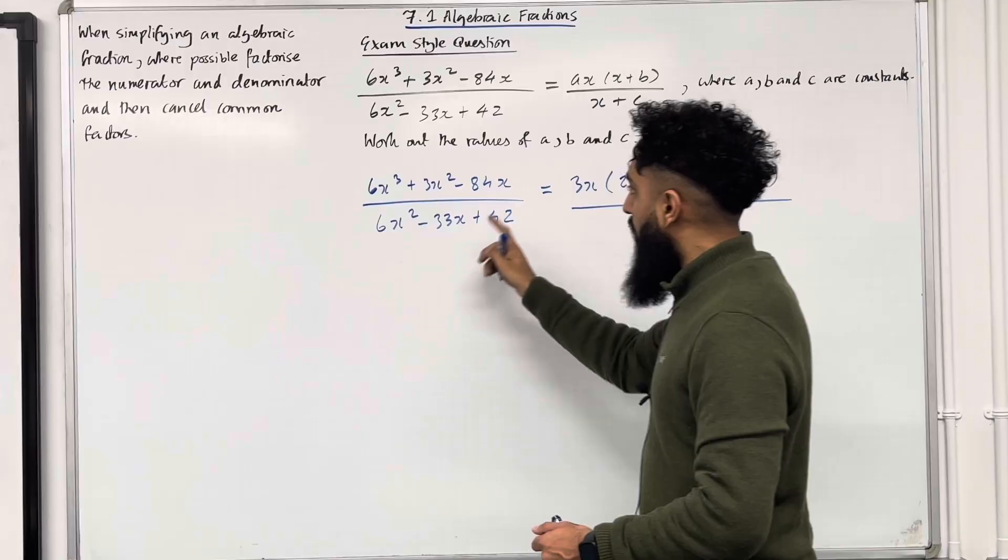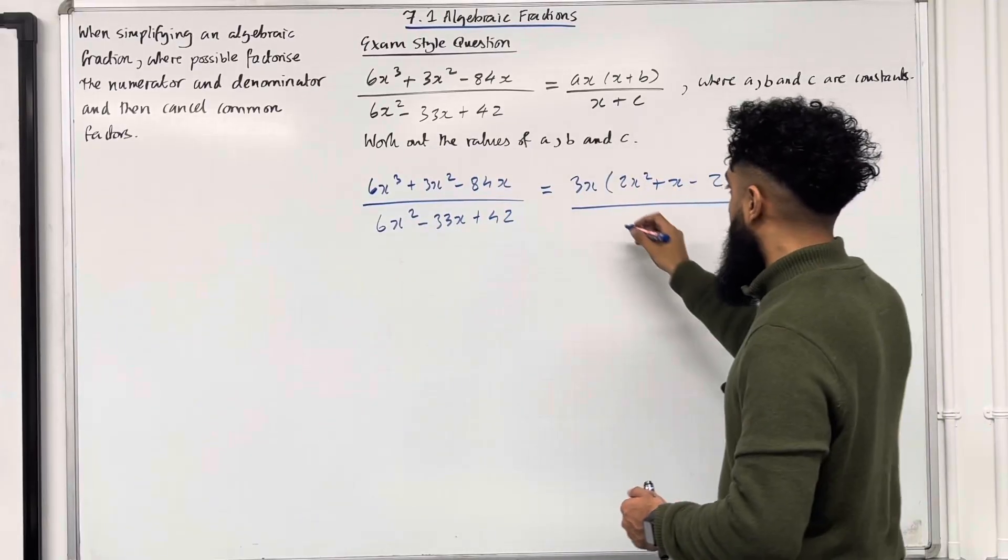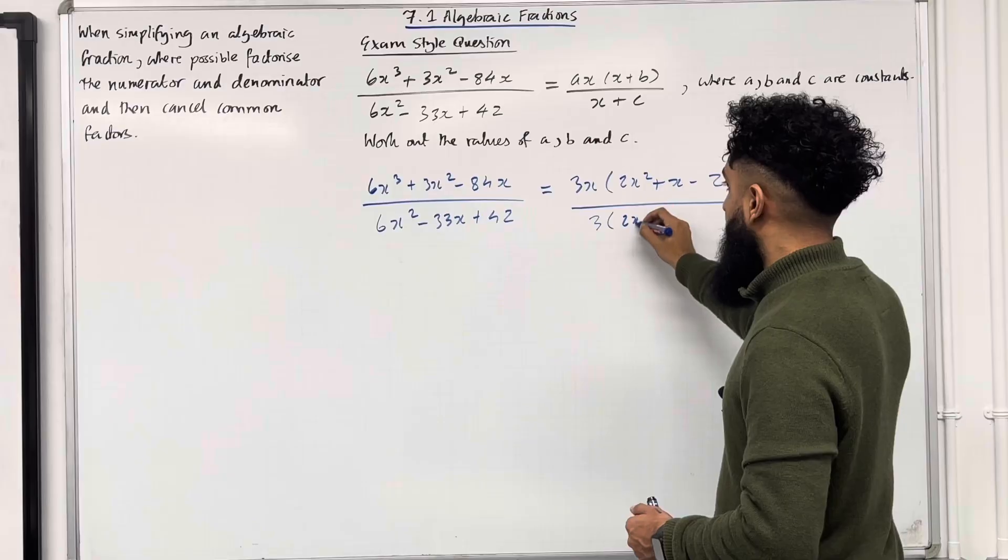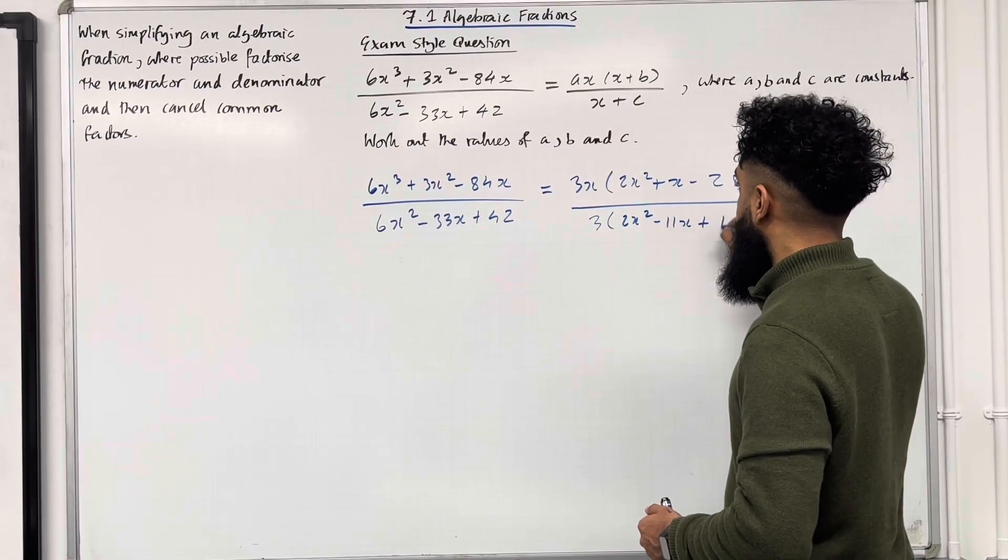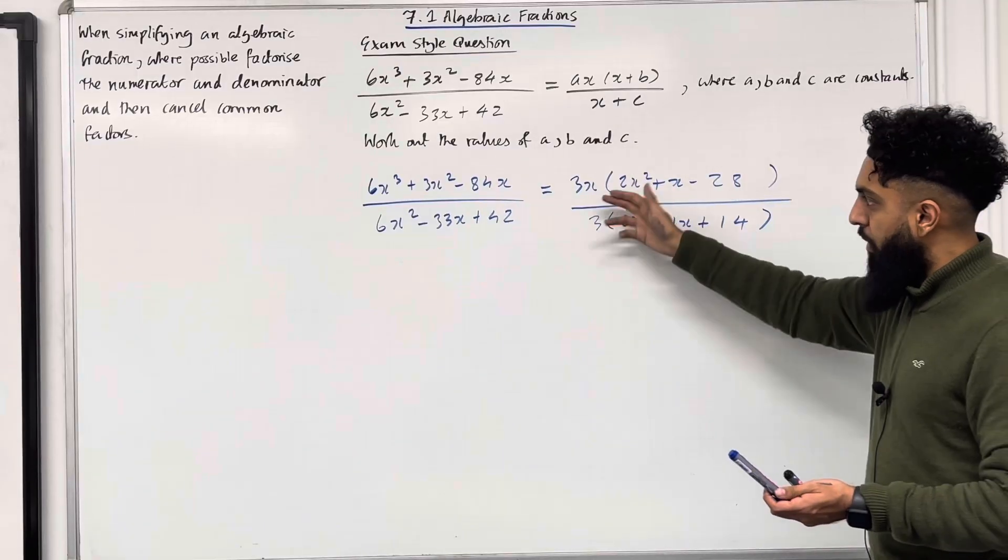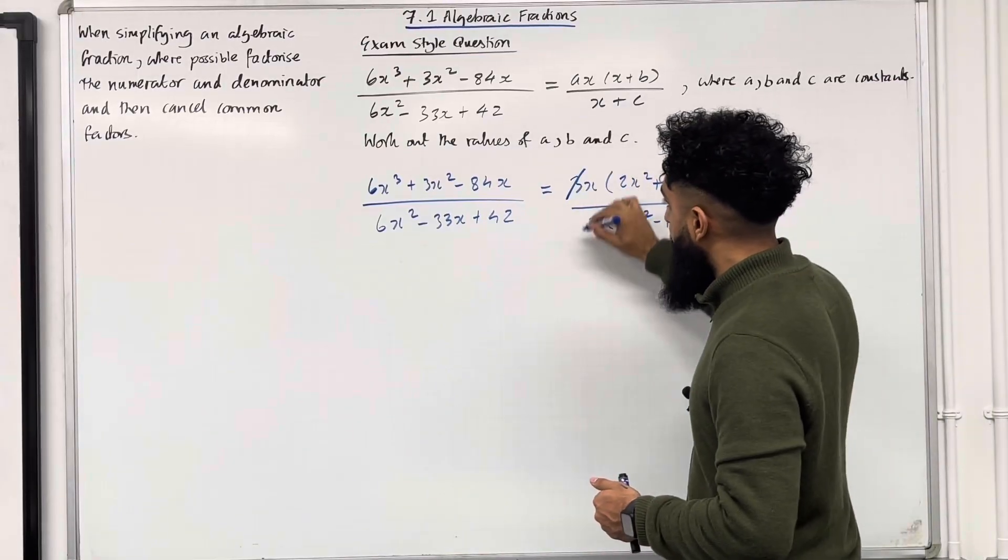Over here, we can take out a common factor of 3. So I've got 3 outside. Inside the bracket, I've got 2x squared minus 11x plus 14. Notice that the 3's will cancel. So we can cancel the 3's.